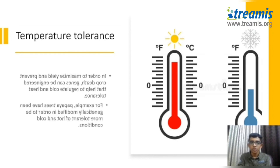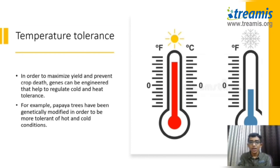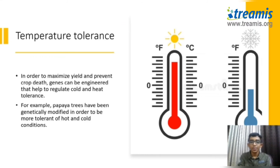Temperature tolerance — in order to maximize yield and prevent crop loss, crops can be engineered to help regulate cold and heat tolerance. For example, papaya trees have been genetically modified to be more tolerant of hot and cold conditions.